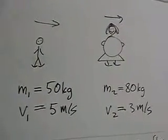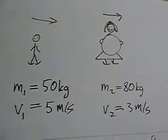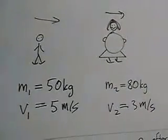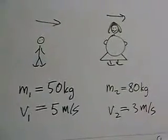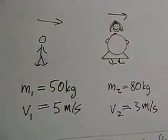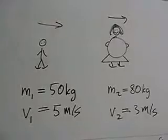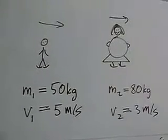So basically the boy is going to catch up with the grandma, and he's going to grab onto her from behind, and then together they're going to continue to move, of course, in the same direction. The question is how fast will be their speed as they continue to move together after the collision?